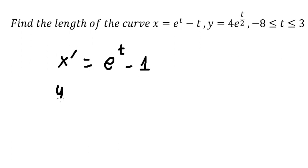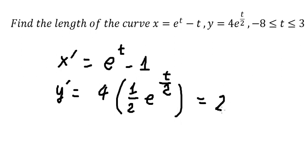Now we find the derivative of y. So this one, we have 1 over 2 multiplied by e to the power of t over 2. So number 4 divided by 2, we have 2.